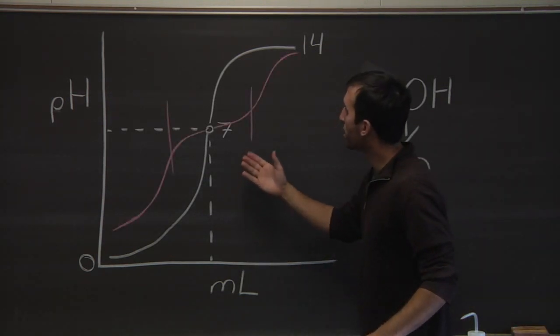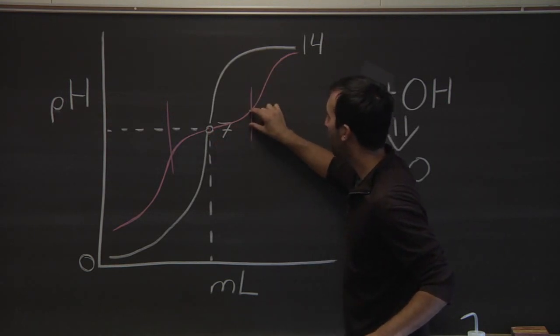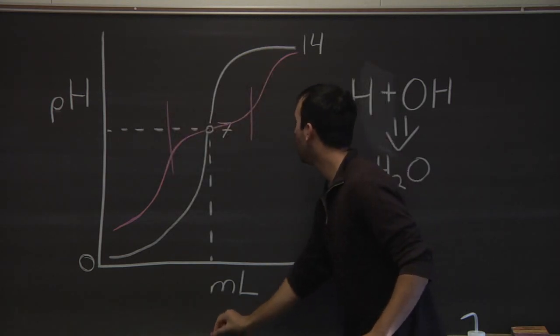So a buffer is going to resist change, which means that if we add the same quantity of base, it's going to change much less in terms of pH than it would in an unbuffered solution.